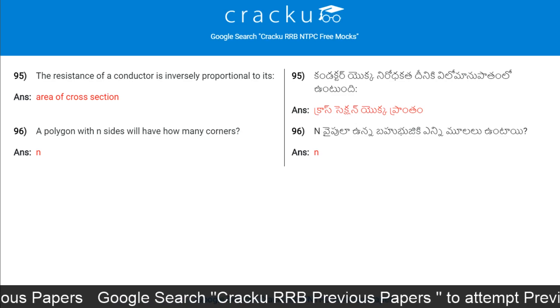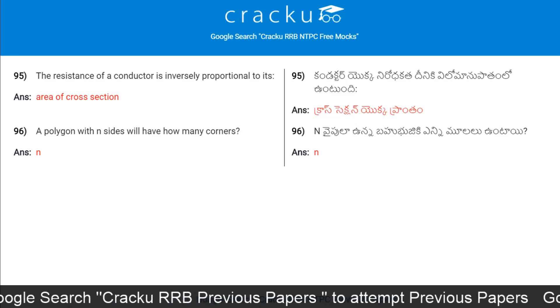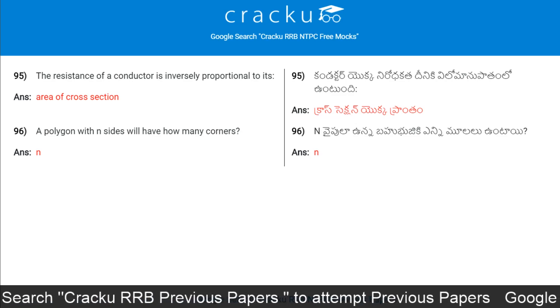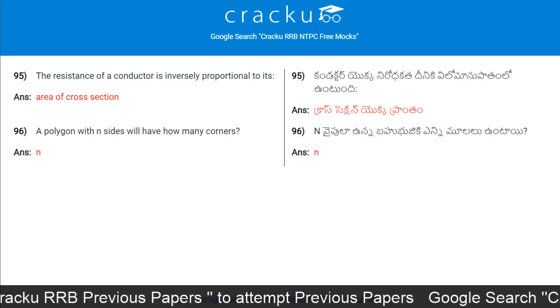A polygon with N sides will have how many corners? The answer is N.